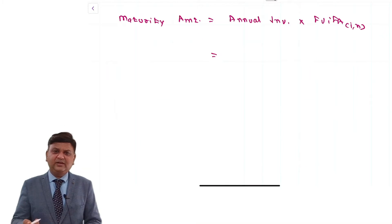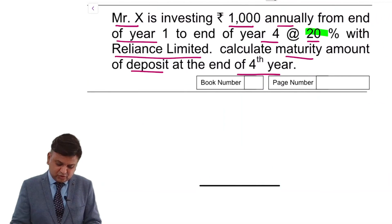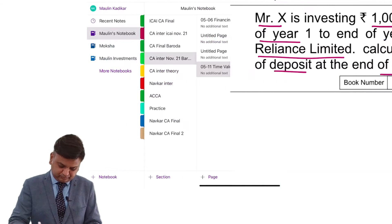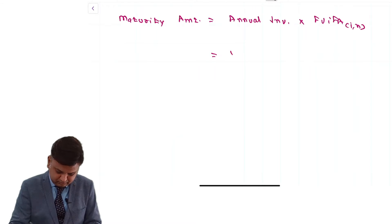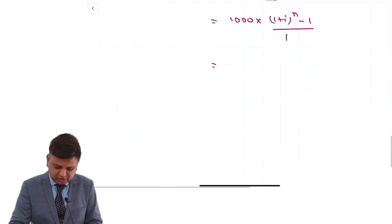Maturity amount is equal to annual investment into FVIFA at I for N number of years. What is the amount of annual investment? The amount of the annual investment is Rs. 1000 into FVIFA is 1 plus I raised to N minus 1 whole divided by I. This is a simple formula.